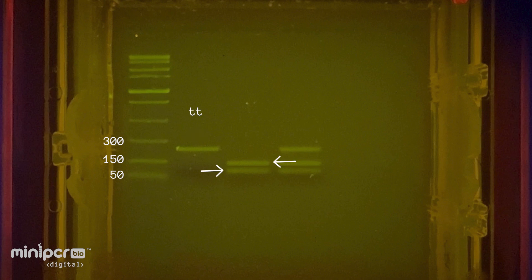In the second lane, we see two bands. This band traveled the same distance as the 150 base pair band in the ladder, indicating it contains DNA fragments that are 150 base pairs long.